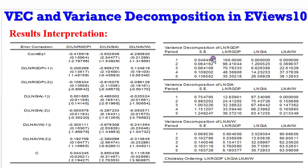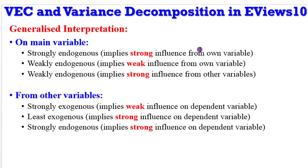Before I go into the interpretation, I want to keep you abreast of some certain words I'll be using. I have a generalized interpretation divided into two components. How do you interpret the effects of the forecast variance decomposition on the main variable relating it to effects from other variables? If there is a strong influence from that variable itself — that is the dependent variable — you will say that it is strongly endogenous.